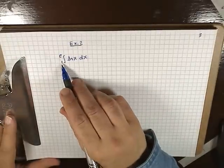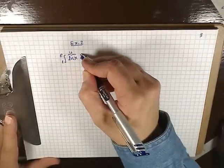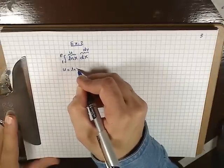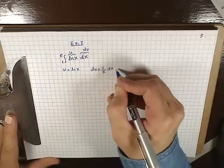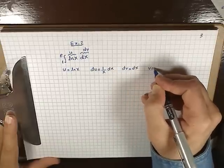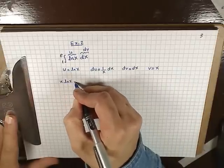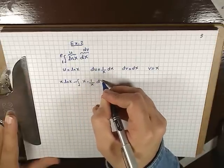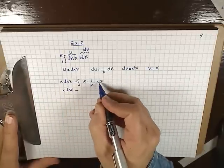Example 2: here we have the integral from 1 to e of ln x dx. There's only one term, so we let u equal ln x and dv equal dx. Differentiating, du equals 1/x dx. Integrating dv, we get v equals x. So u times v is x ln x, minus the integral of v times du, which is the integral of x times (1/x) dx. The x's cancel out, giving x ln x minus the integral of 1 dx, which is just x.